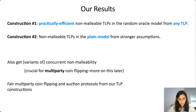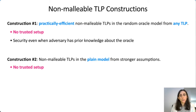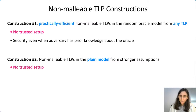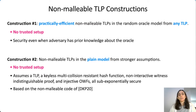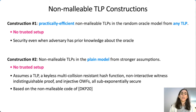Both constructions have no CRS or trusted setup. Our first construction is in the auxiliary-input random-oracle model, where security holds even when the adversary has some prior knowledge about the oracle—this is nice in practice where instead of a random oracle we have a fixed function that an attacker might have pre-computed information about. Our second construction is in the plain model but requires sub-exponentially secure cryptographic primitives, and it is based on the non-malleable code of Dachlan-Złotek-Komargotsky-and-Pass from last year, adapted to our setting involving concurrency and a larger set of attacks.